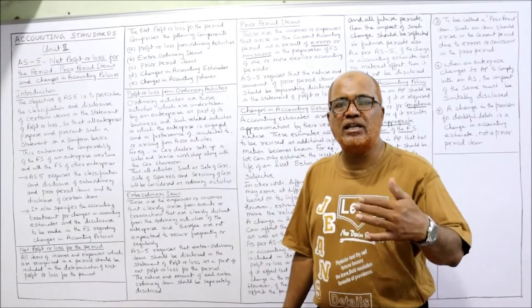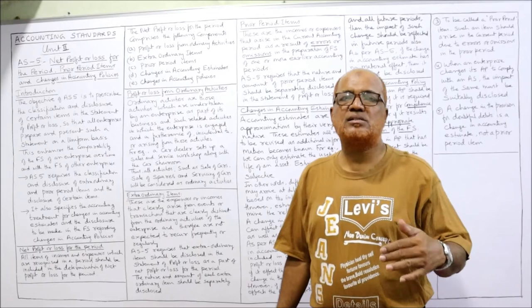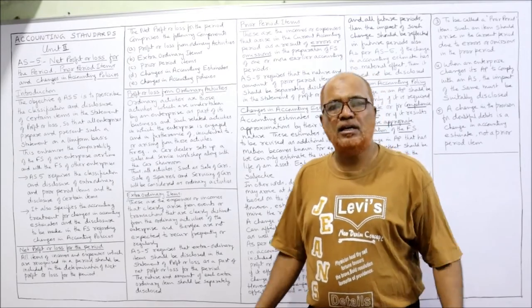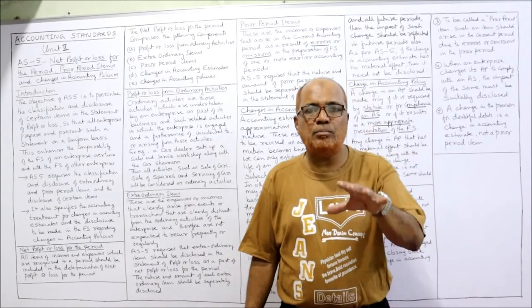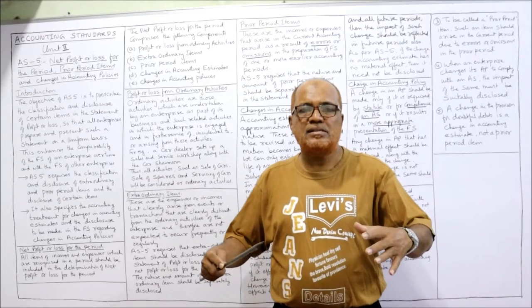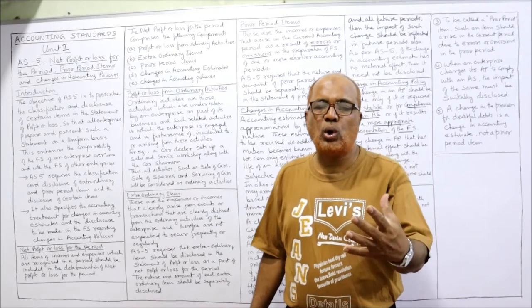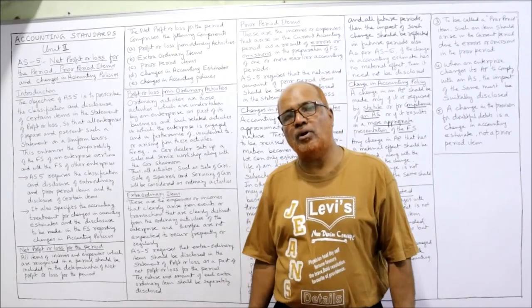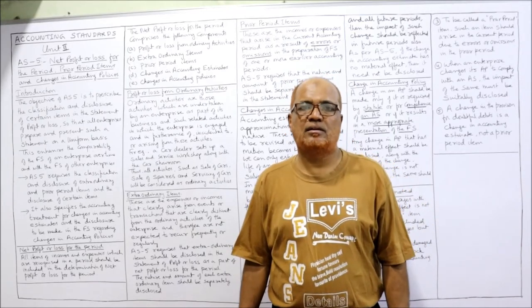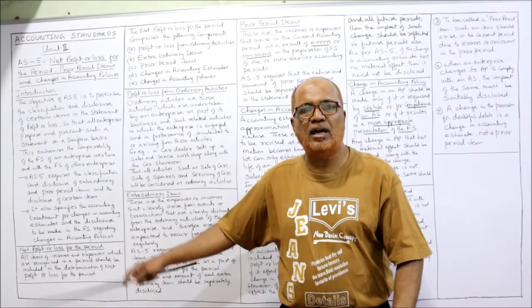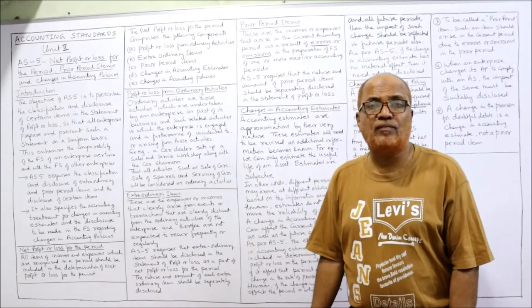AS5 also specifies the accounting treatment for changes in accounting estimates and the disclosure of changes in accounting policies. While making financial statements, a number of accounting estimates are made, and a business may also change accounting policies. How to disclose changes in accounting policy and how to reflect changes in accounting estimates — these are covered in this accounting standard.